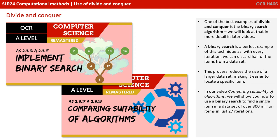One of the best examples of divide and conquer is the binary search algorithm, and we'll look at this in more detail in later videos. A binary search is a perfect example of this technique, as with every iteration we can discard half of the items from the data set. This process reduces the size of a larger data set, making it easier to locate a specific item.